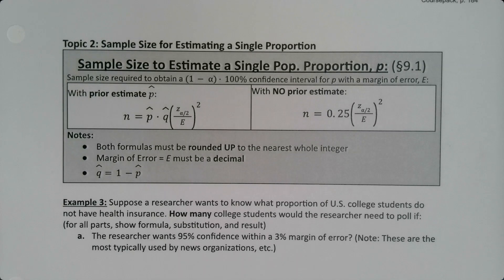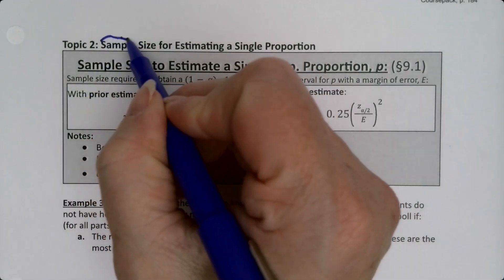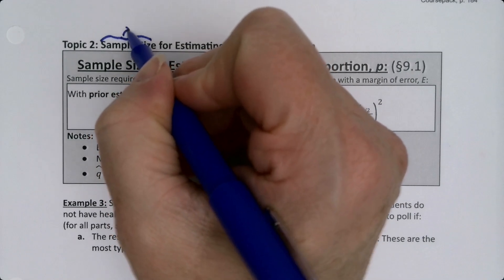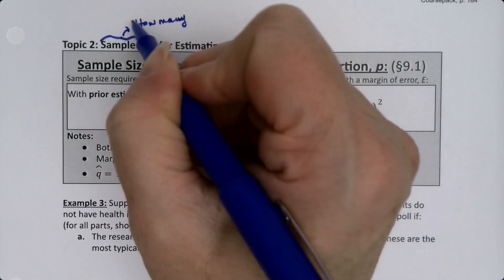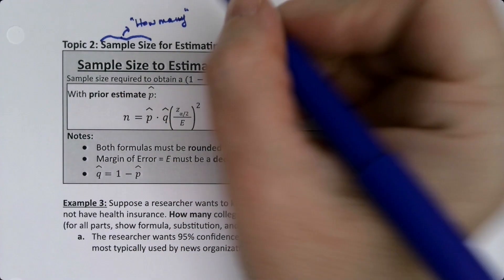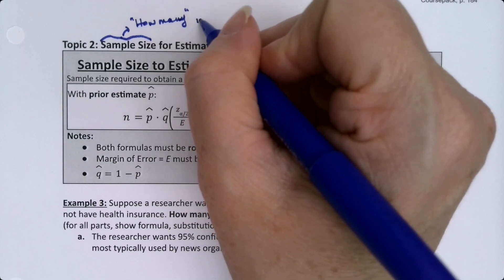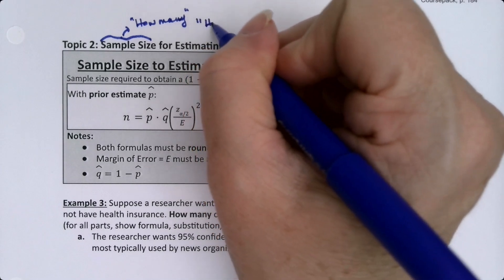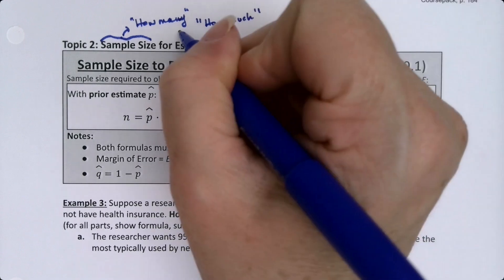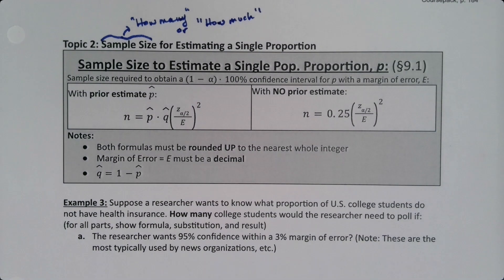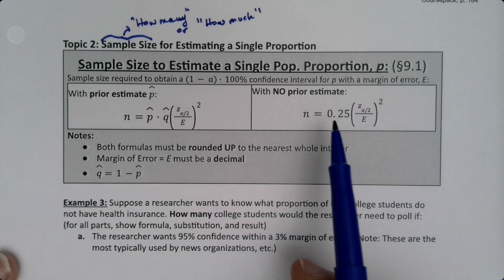Now we're going to move on to the second topic of this section, which is sample size. Sample size is answering the question of how many — how many people do we need to poll, how many tigers do we need to dart and tag, how much candy do we need to buy. How many or how much — that's what sample size answers for us.